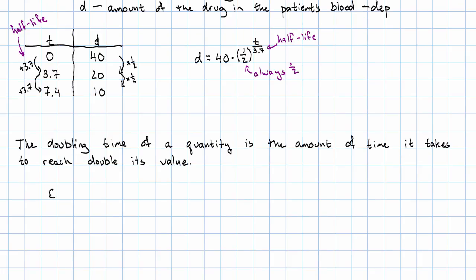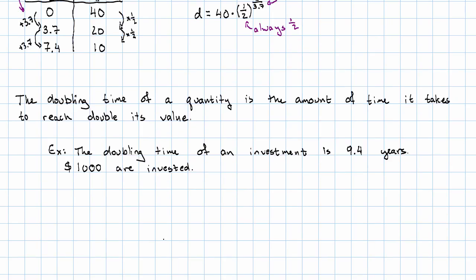For example, we might be told that the doubling time of an investment is 9.4 years. Suppose $1,000 are initially invested. Our variables are v, the value, that's what's going to be multiplied over and over again, so that's our dependent variable,